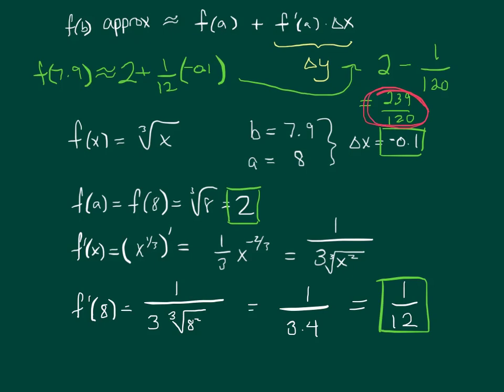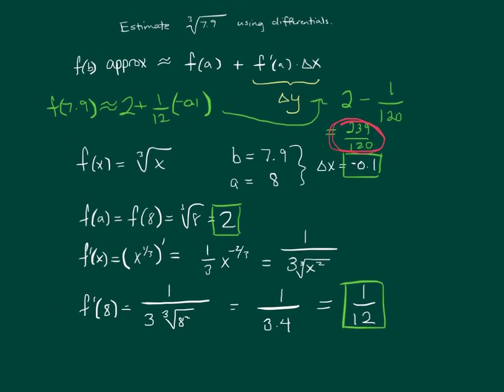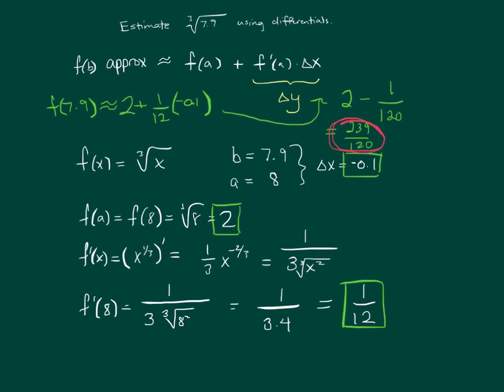Again, recapping everything, we had to pick our function. That was kind of obvious, given that we were asked to estimate the cube root of something. Obviously, we're going to pick the function as cube root. B is forced upon us. It's 7.9. The key then is we want to pick an A that's easy to plug in to the function. Here, A is 8.